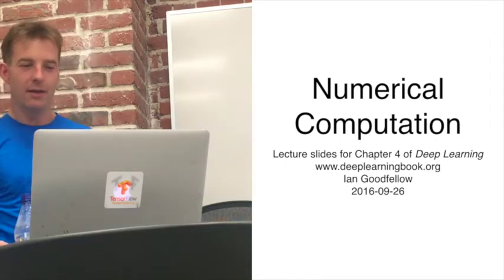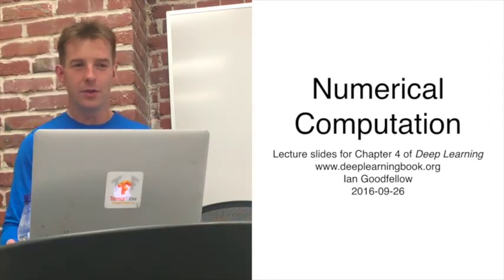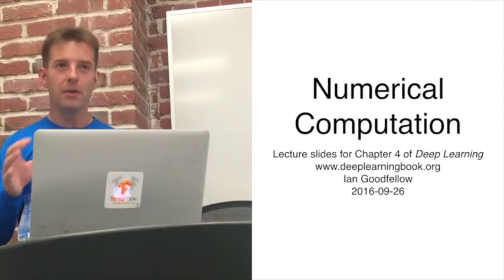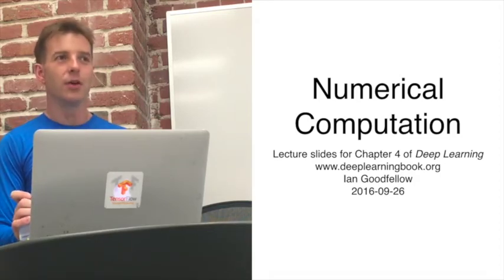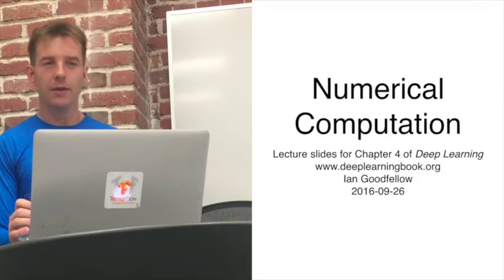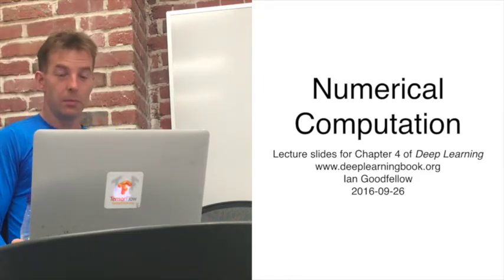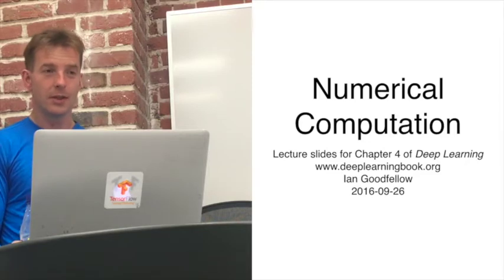I skimmed the chapter and there are quite a few things crammed in there even though it's short. One thing you may want to take out of it is optimization, because it talks about optimization and also Jacobians and Hessians, because those things come up all over machine learning.